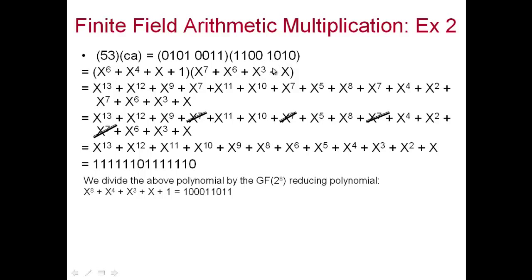Performing term-by-term multiplication, some x^7 terms cancel out via XOR. The other terms don't cancel, giving a long polynomial written in binary as 1 1 1 1 1 1 0 1 1 1 1 1 0 0 — covering degrees from x^13 down to a constant. Since the degree exceeds 7, we again need to apply reduction using x^8 + x^4 + x^3 + x + 1.